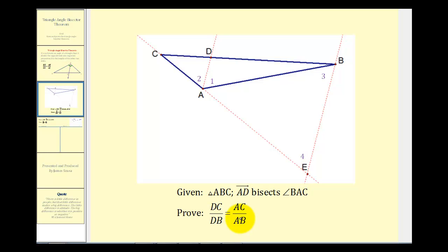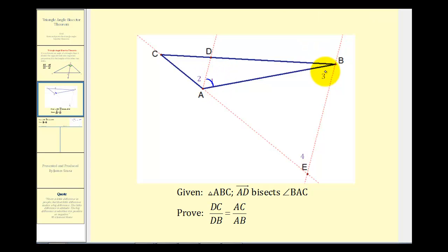The first thing we know is true from the previous theorem — the triangle proportionality theorem. If line AD is parallel to line EB, which is a side of this large triangle, then the ratio of CD to DB equals the ratio of CA to AE. Also, since AD is parallel to BE, angle one is congruent to angle three by alternate interior angles, and angle two is congruent to angle four by corresponding angles. Using all that information, we can perform some substitutions and prove the theorem.